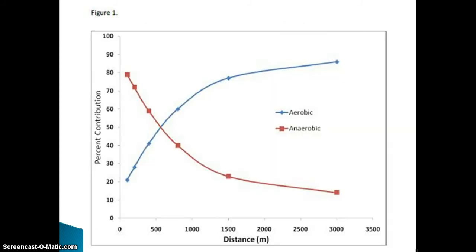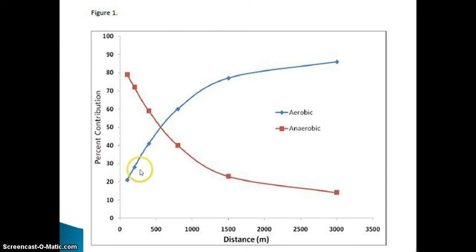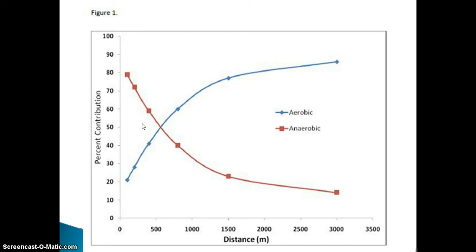I've included this slide so that you can see that represented slightly differently — rather than a time, we've actually got distances down the bottom here in metres. We've got 500 metres, 1,000 metres, 1,500 metres. The blue line is the percentage of our energy coming from aerobic sources, and the red line is the percentage coming from anaerobic sources. This is all stuff we know, but it's useful to bear in mind when you think about the aerobic system.